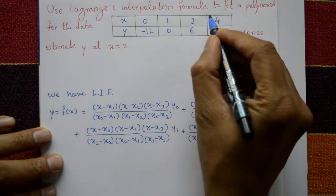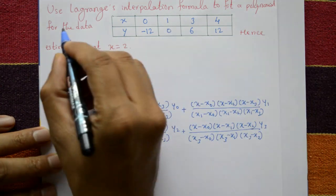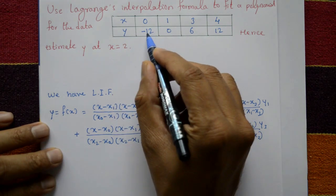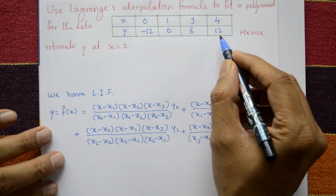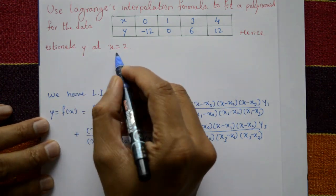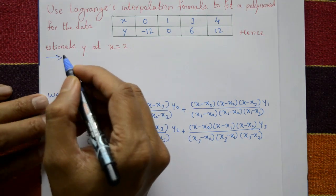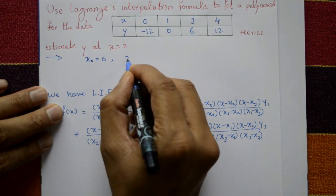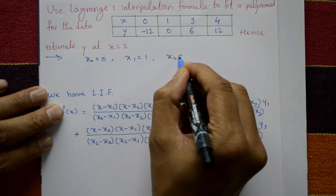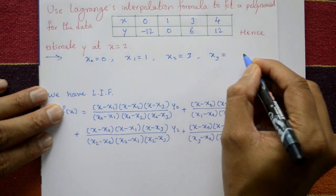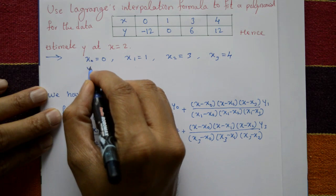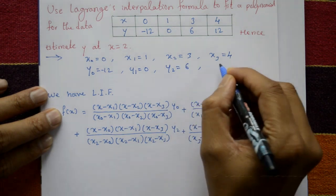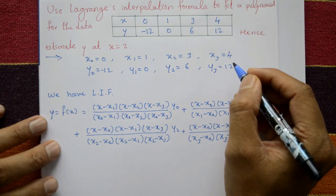Use Lagrange's interpolation formula to fit a polynomial for the data: x is given as 0, 1, 3, 4 and y (means f of x) is minus 12, 0, 6, and 12. Hence estimate y at x equal to 2. Solution: we write x naught = 0, x1 = 1, x2 = 3, x3 = 4, y naught = minus 12, y1 = 0, y2 = 6, y3 = 12.